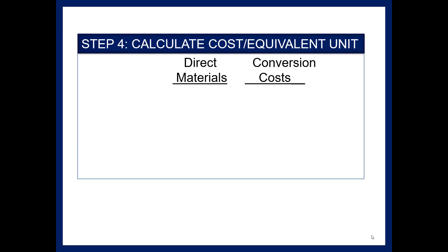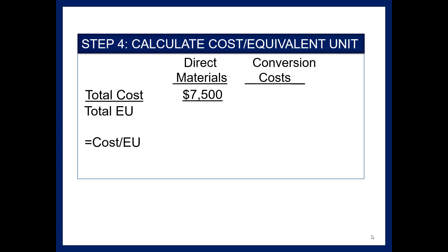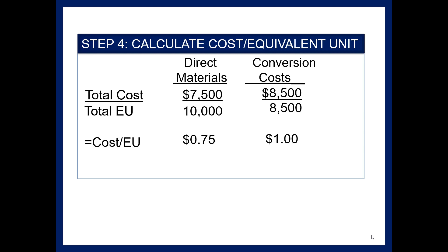Step four is to calculate the cost per equivalent unit. For materials, total cost of $7,500 divided by 10,000 equivalent units gives $0.75 per unit. For conversion costs, $8,500 divided by 8,500 equivalent units gives $1.00 per unit. So our total cost per equivalent unit is $1.75, meaning a finished unit in this production run costs $1.75.